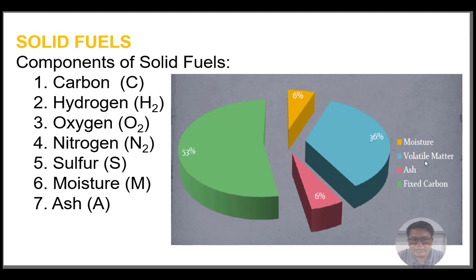Volatile matter is composed of hydrogen, nitrogen, and so forth — that is almost 36 percent. For ash, we have this portion, and for fixed carbon, this is a certain percentage.